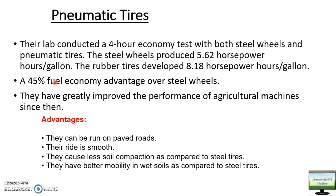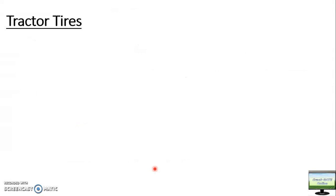Whatever disadvantages the steel tire had all become advantages for the rubber tire. It can be run smoothly on paved roads, it causes less soil compaction, it has better mobility in wet soil, and at the same time it can produce enough drawbar pull for your implements and tractors. Now we will see the types of tractor tires.